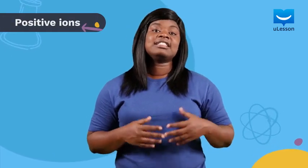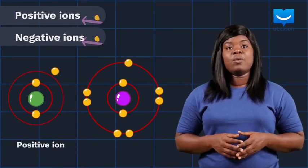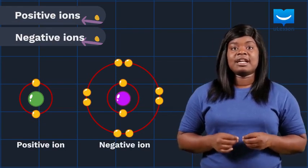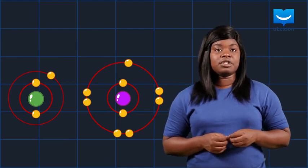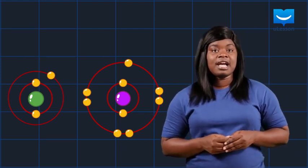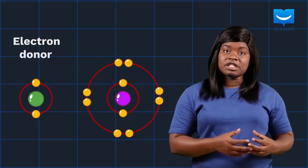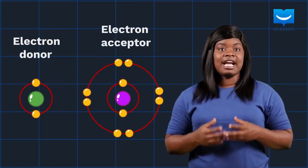Remember that in our lesson on ions in JS2, we explained that there are two types of ions — positive ions and negative ions. A positive ion is formed when an atom loses electrons, and a negative ion is formed when an atom gains electrons. This is exactly what happens during the formation of electrovalent bonds. An atom, referred to as the electron donor, donates electrons from its outermost shell into the outermost shell of another atom called the electron acceptor.